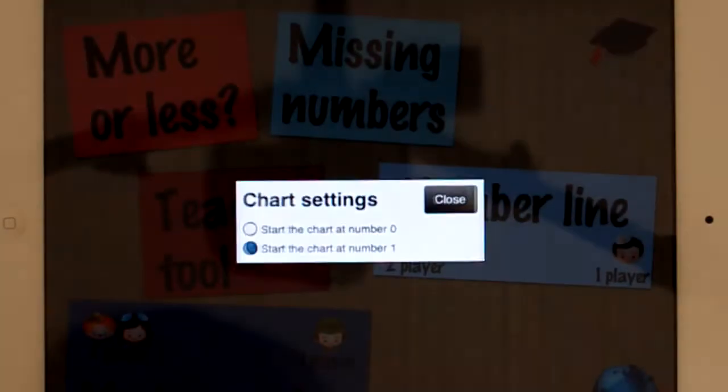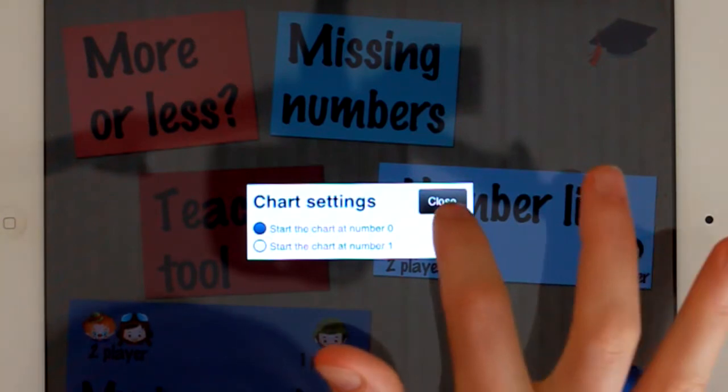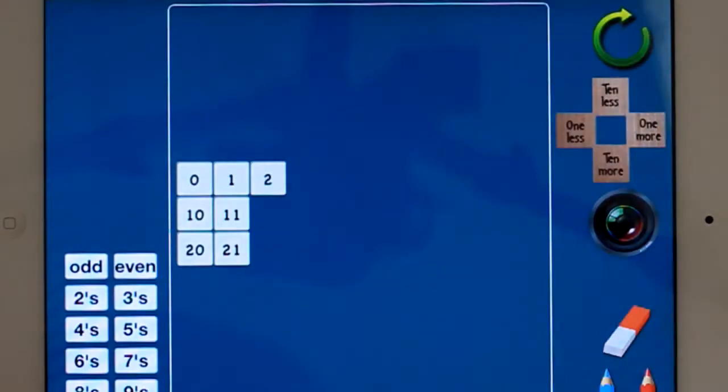If you go back home you can actually change the settings starting at 0. I know that some states or territories or counties, wherever you are in the world, start at either 0 or 1, or sometimes they need to be able to do both. So let's go back to the teacher tool. So I'm starting from 0.